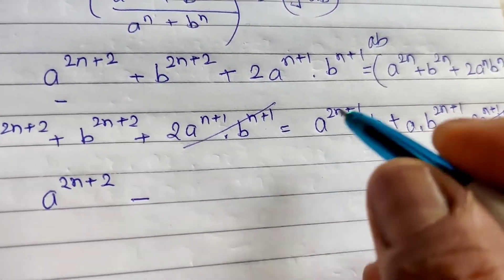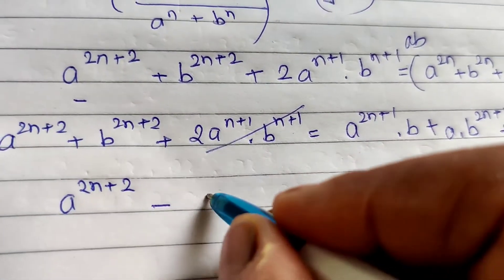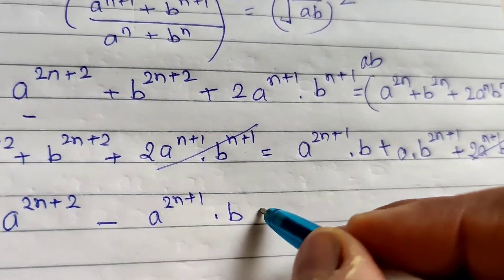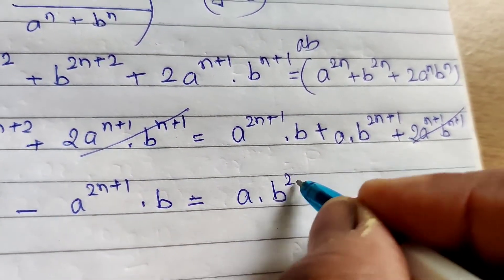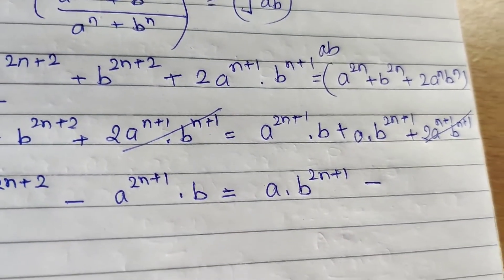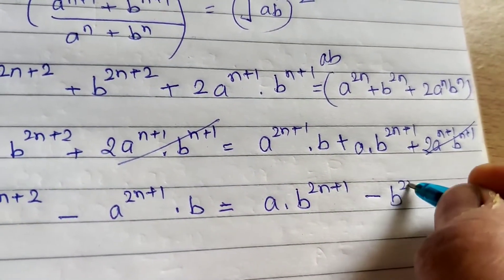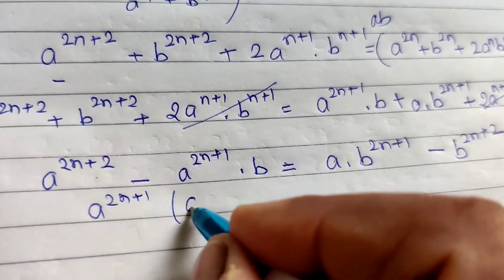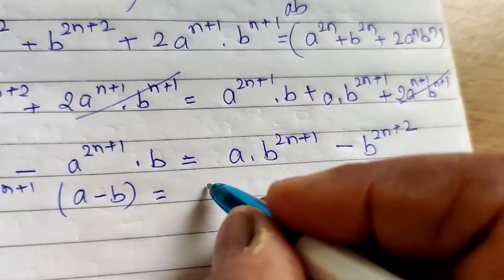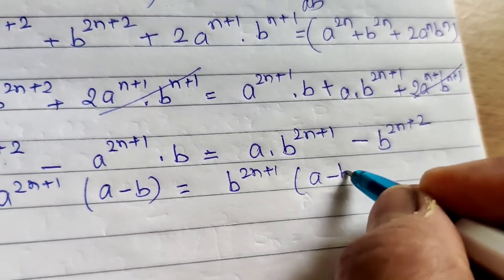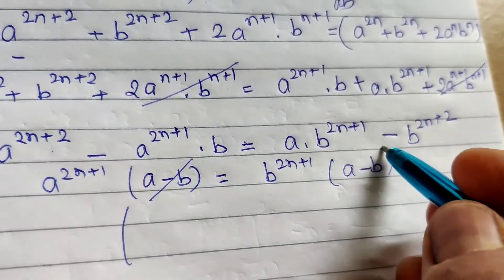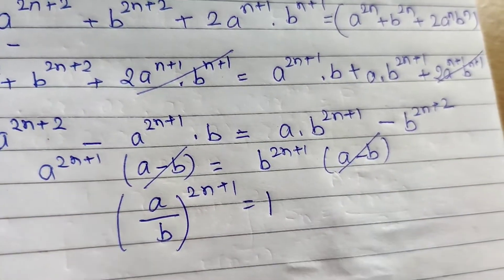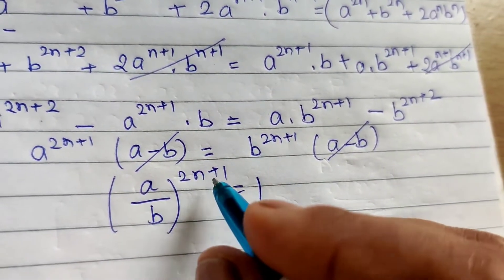After cancelling and rearranging: a^(2n+2) - a^(2n+1)·b plus a^(2n+1) - b^(2n+2) equals zero. Taking a^(2n+1) as a common factor on both sides, we simplify and arrive at the condition that needs to equal zero.